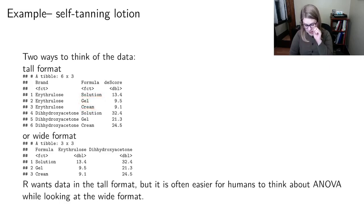And so if we're thinking about data from this experiment, there's kind of two ways to think about it. There's the tall format. And so this one, you're going to see the E brand represented three times, and then the D1, you're going to see the solution appear a couple times, the gel appear a couple times, the cream appear a couple times. So this data set is going to be kind of tall.